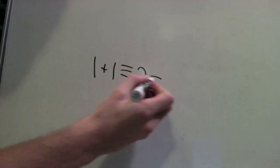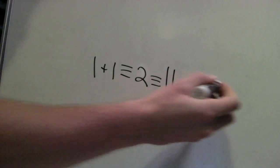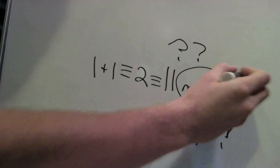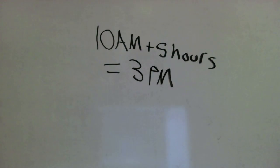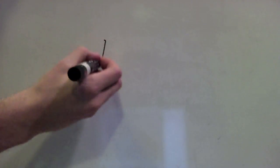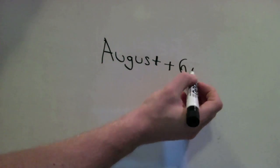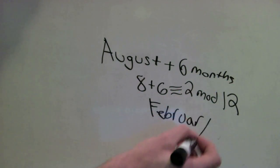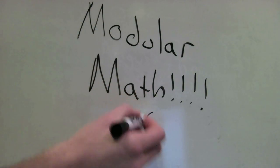One plus one is eleven, mod three. But what the heck is mod three? We use modular math when we use a clock. Ten plus five is three — there should be no shock. Mod twelve is for months and hours. It's not hard, you need no powers. But you gotta know modular math.